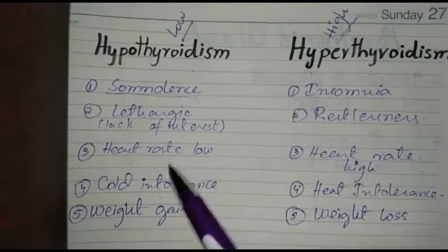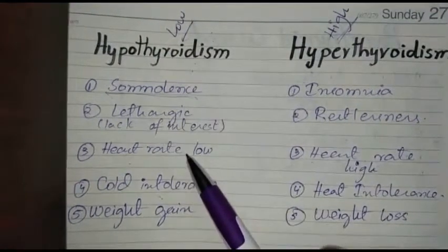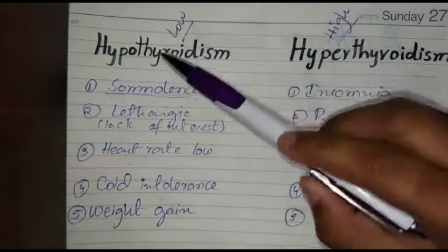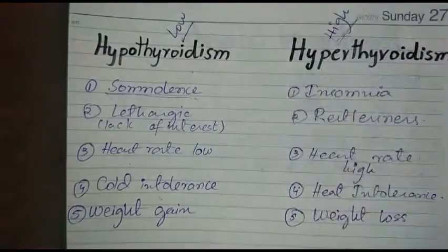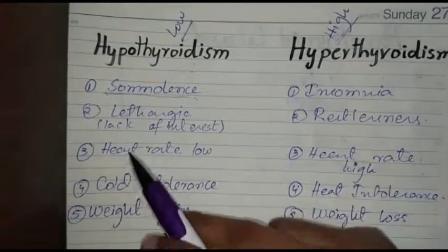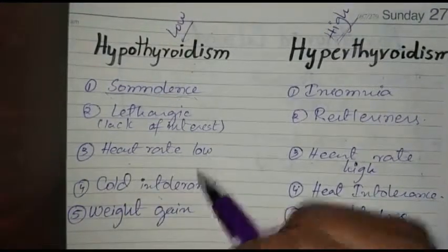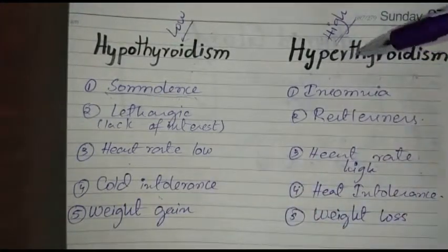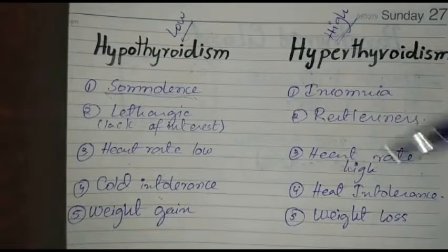Heart rate is low in hypothyroidism. In hypothyroidism, the basal metabolic rate is decreased, heat production is low, and therefore heart rate is low. In hyperthyroidism, the basal metabolic rate increases.